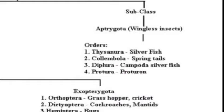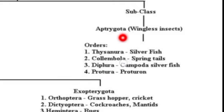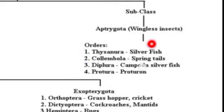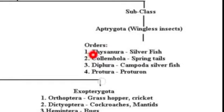So in your syllabus, you have to learn about only one Apterygota insect, which is Thysanura. Only the order Thysanura is included in your syllabus.